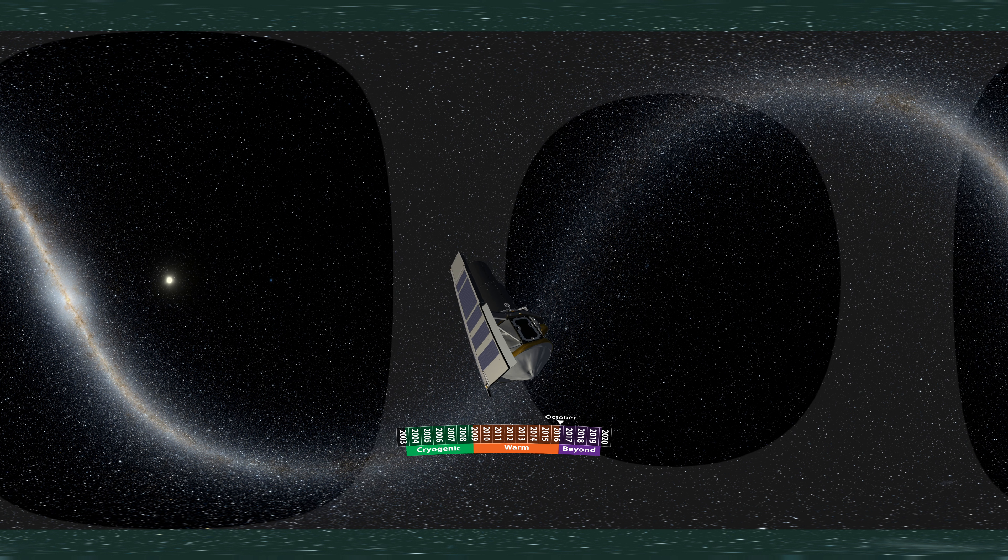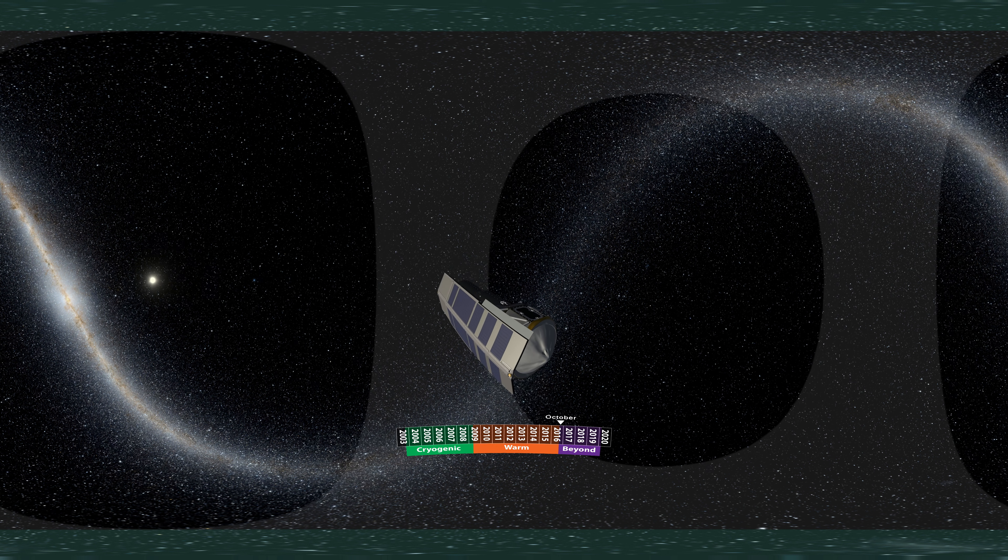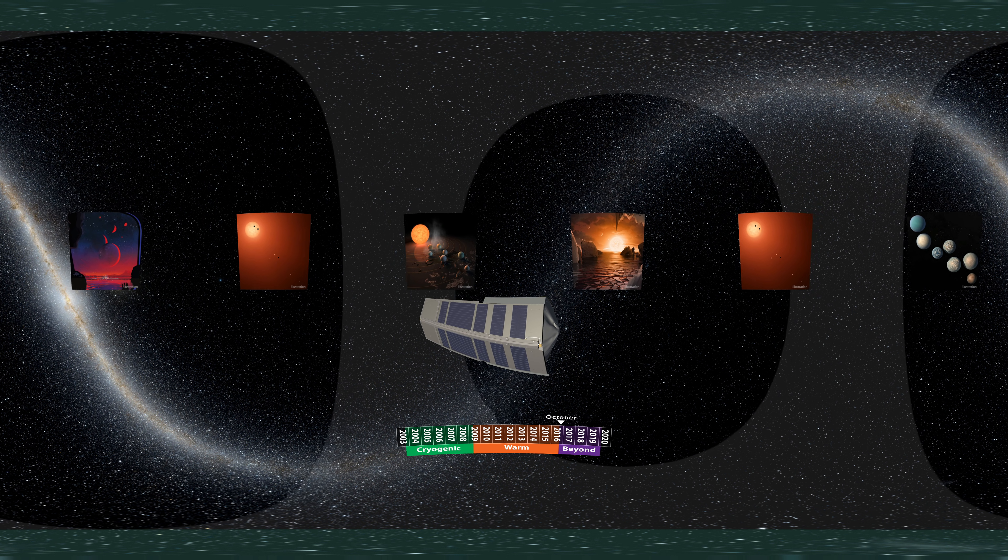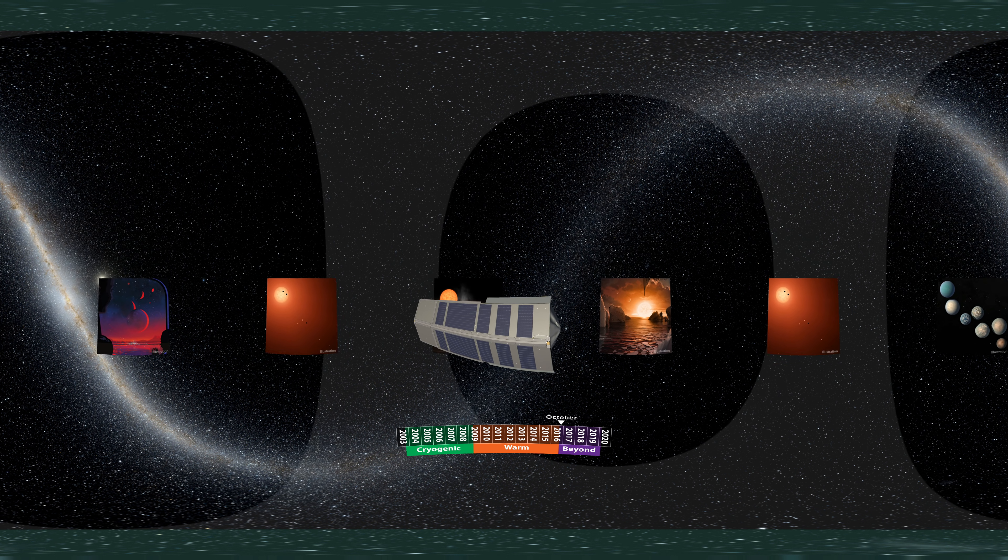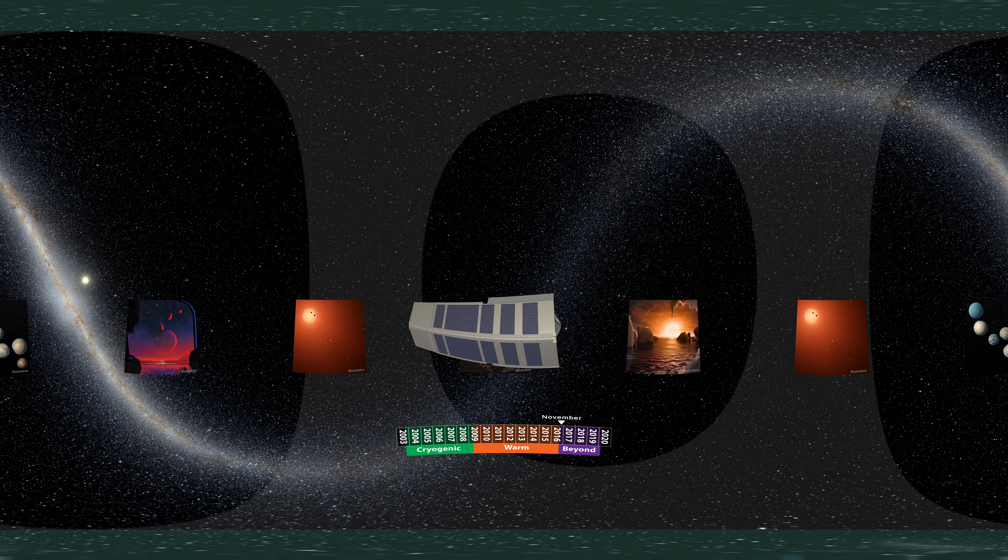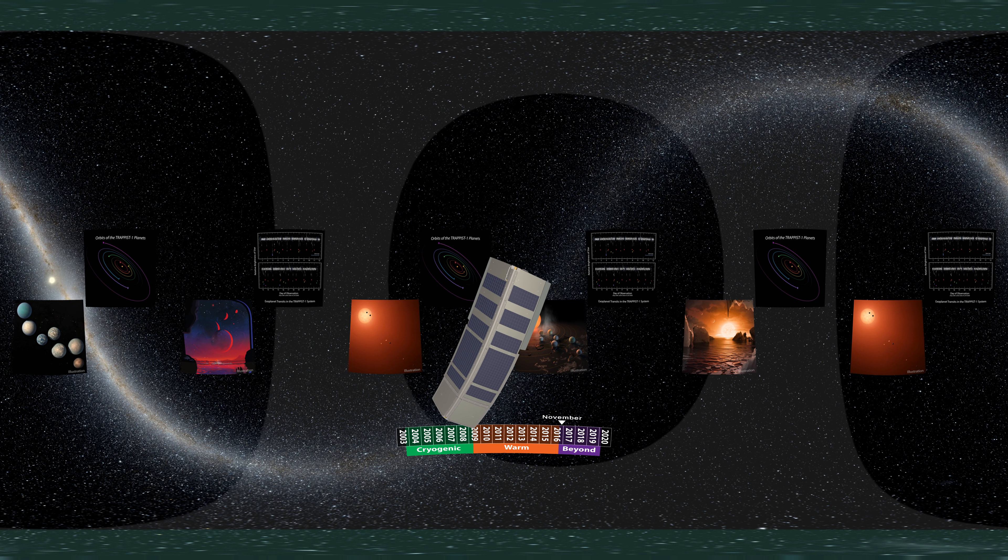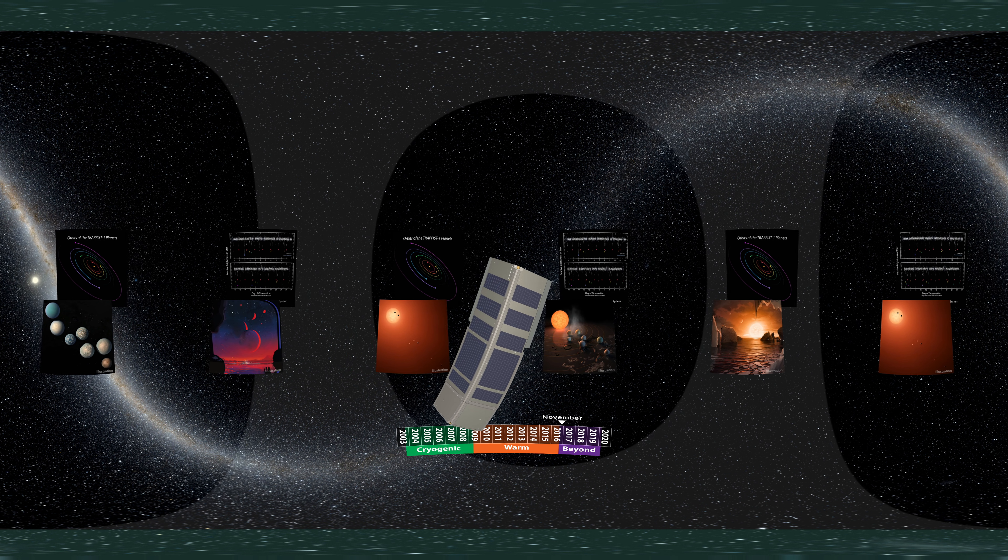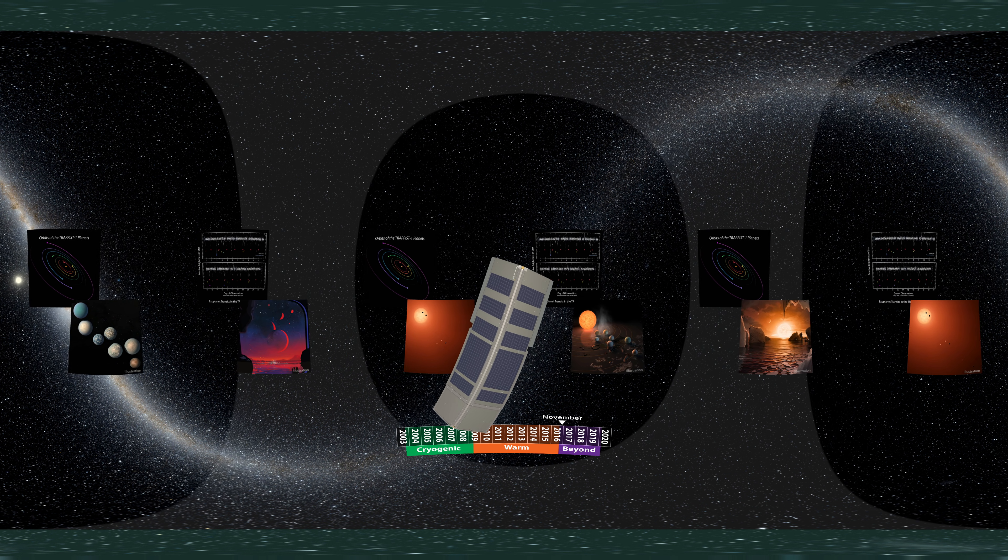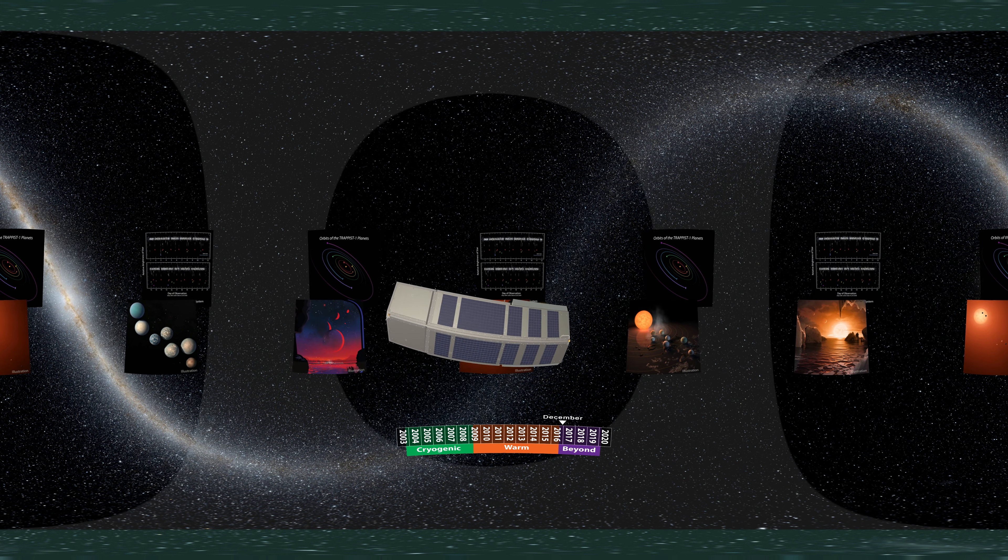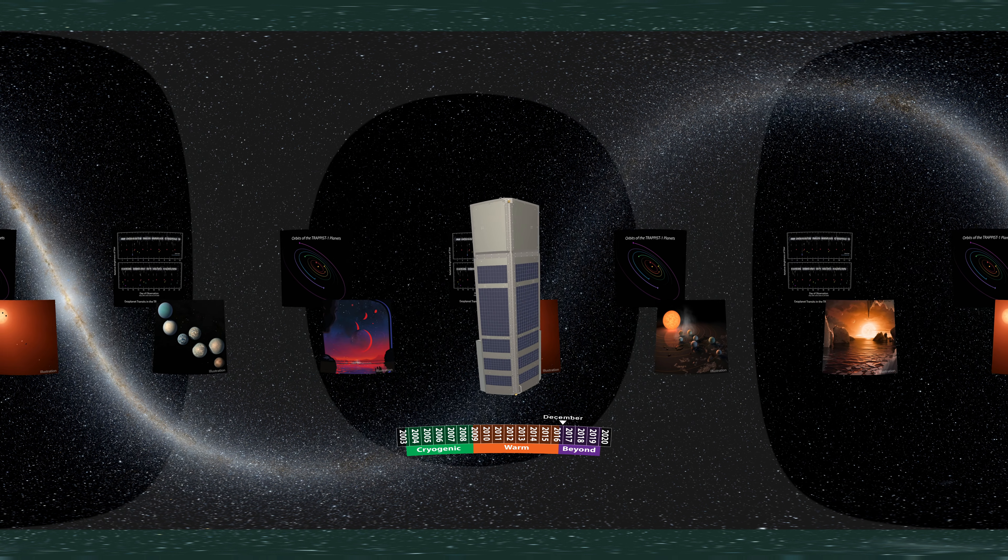The first observing program of this phase was a three-week-long observation of an exoplanet system discovered by ground-based telescopes and thought to harbor at least three rocky worlds. The target was known as TRAPPIST-1, and Spitzer's nearly constant monitoring revolutionized our understanding of the system, revealing a total of seven Earth-sized planets and helping to determine their physical properties.